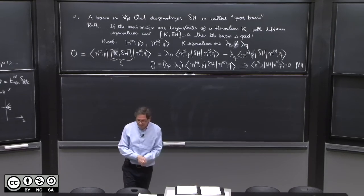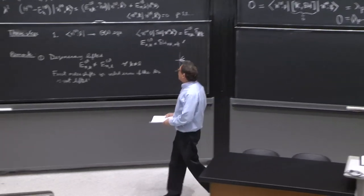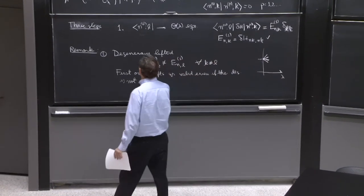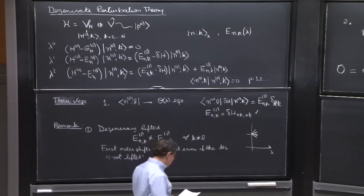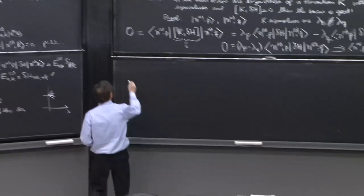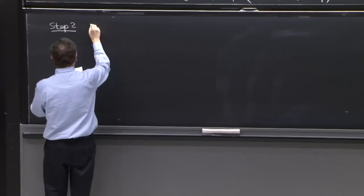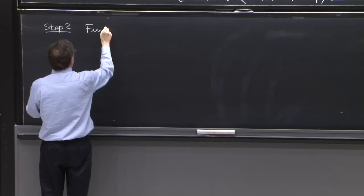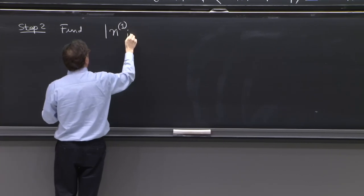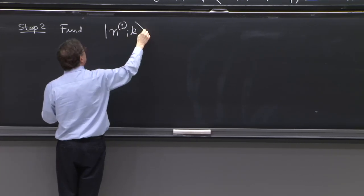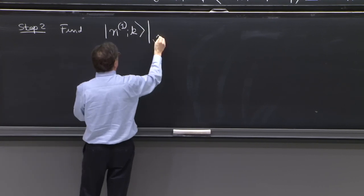It's time for step two. What don't we know here? We don't know anything about the state correction — n1k. What is n1k? Step two is to find the piece of |n1k⟩ that is in the space v̂.